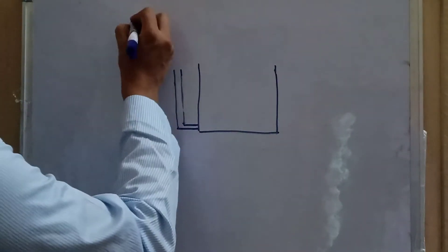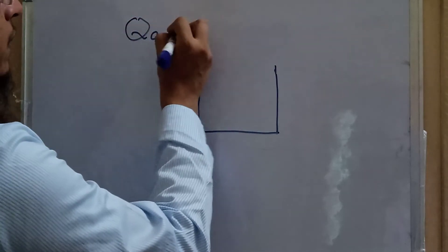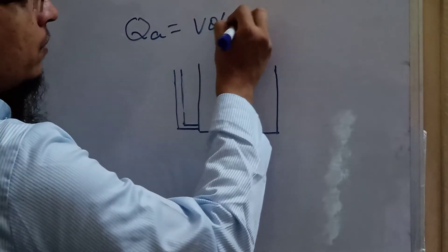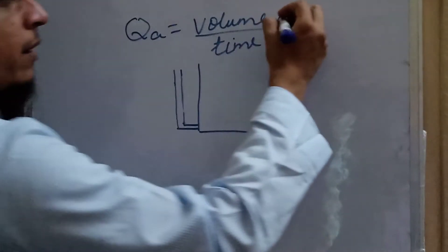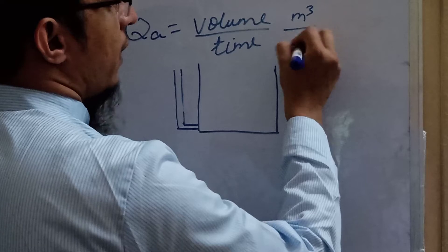Basically, actual discharge Qa will be volume upon time. Volume will be in meter cube and time in seconds, so that is meter cube per second or QMEC. We can calculate the discharge.